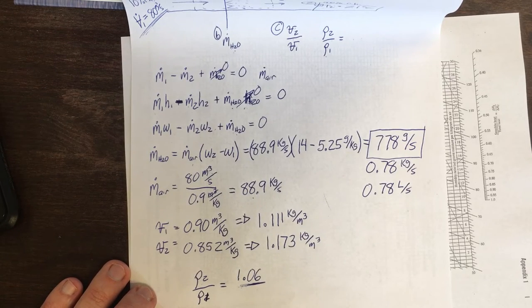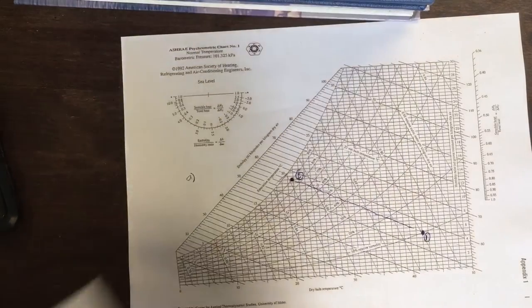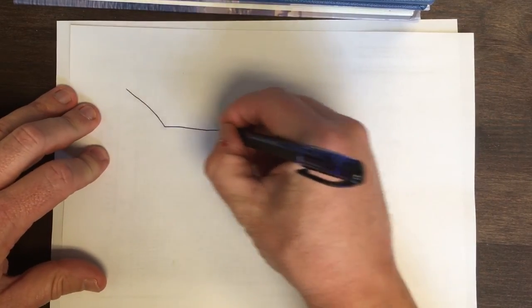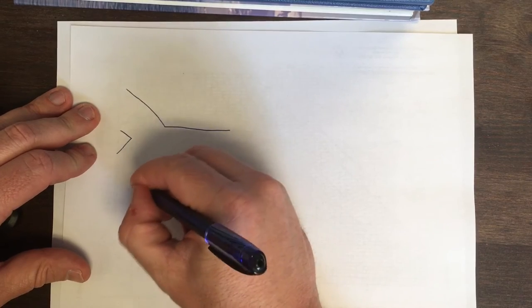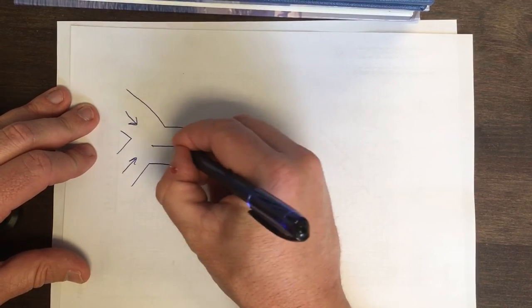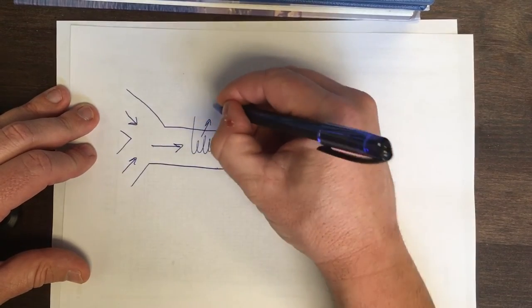So those are the psychrometric processes. Typical arrangement, how you might see an air handling unit kind of industrial scale, would be you'd start with mixing—they have recirculated air and fresh air—and then you'd go through the cooling coil where you could reject heat.